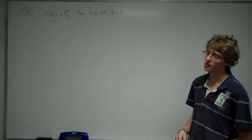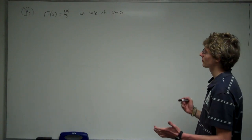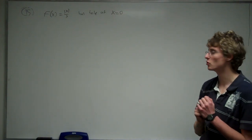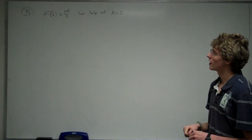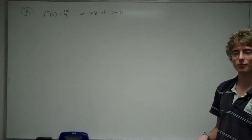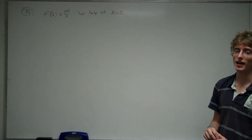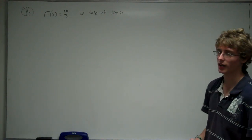Alright, this is question number 15, exam form code A, and the question asks us to prove whether this is true or false. The question reads: f of x equals the absolute value of x over x. Now, does this have a hole at x equals 0?